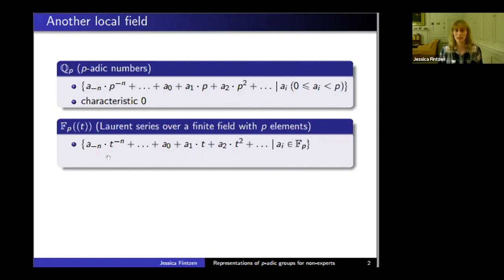This field now has characteristic p because p equals zero. These two fields have different characteristics, but they are very similar—both look like power series or Laurent series. They behave very similarly, and we call them both local fields.